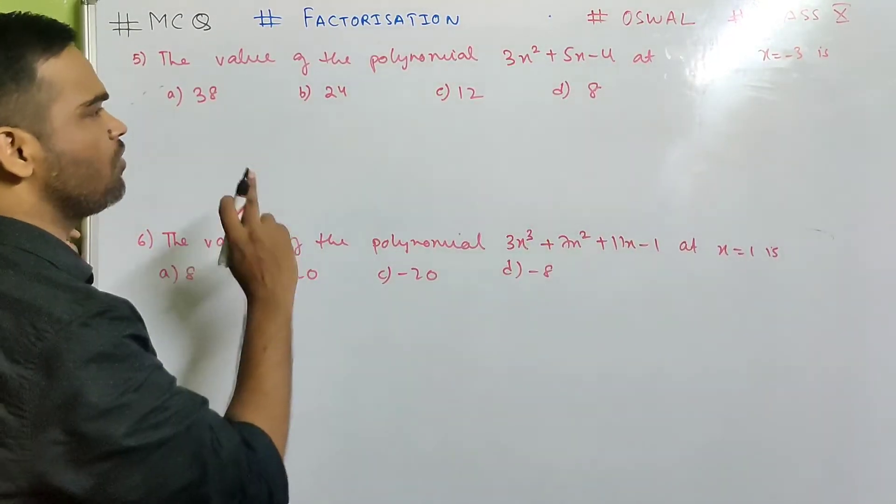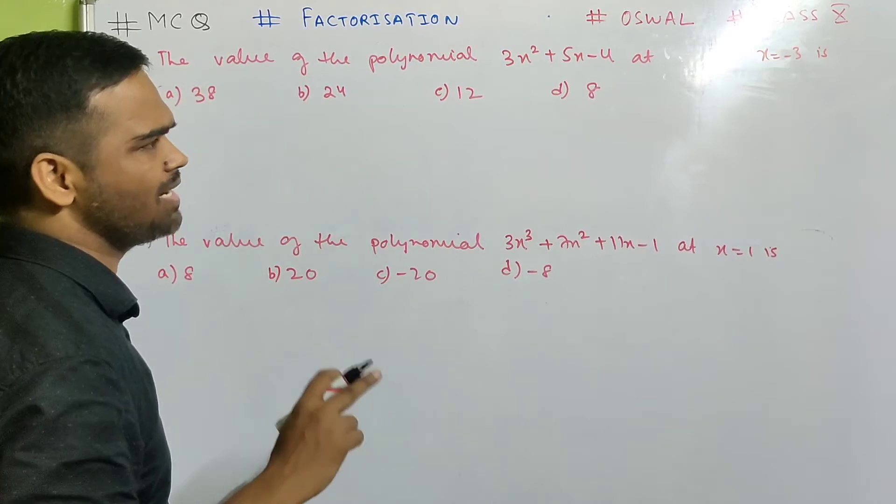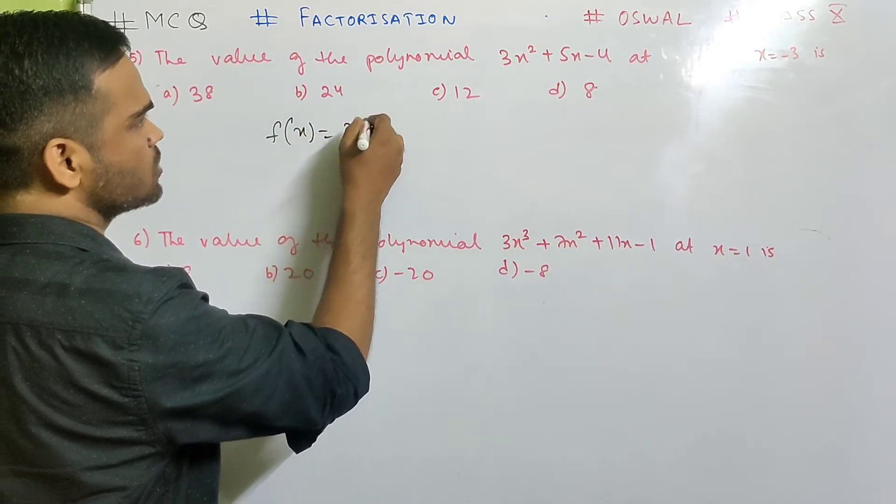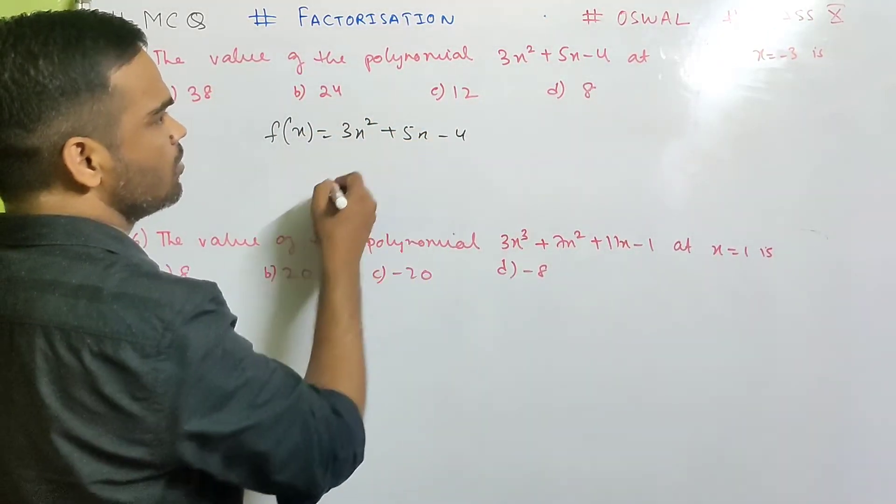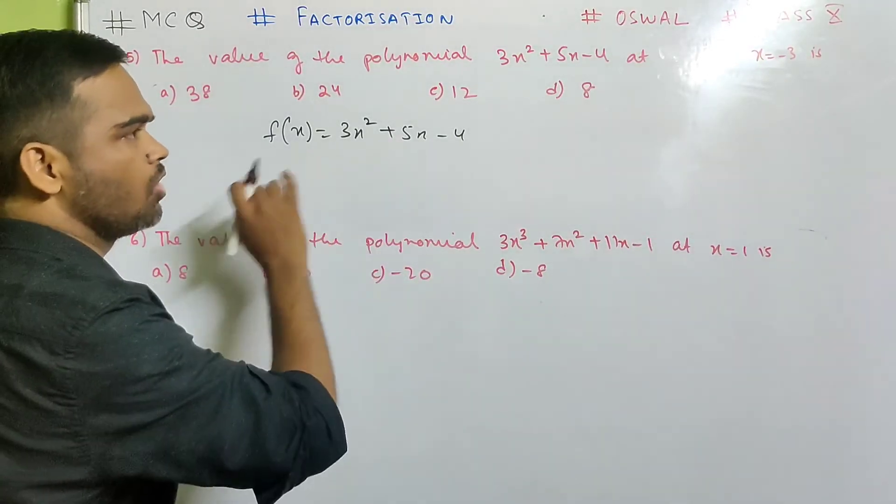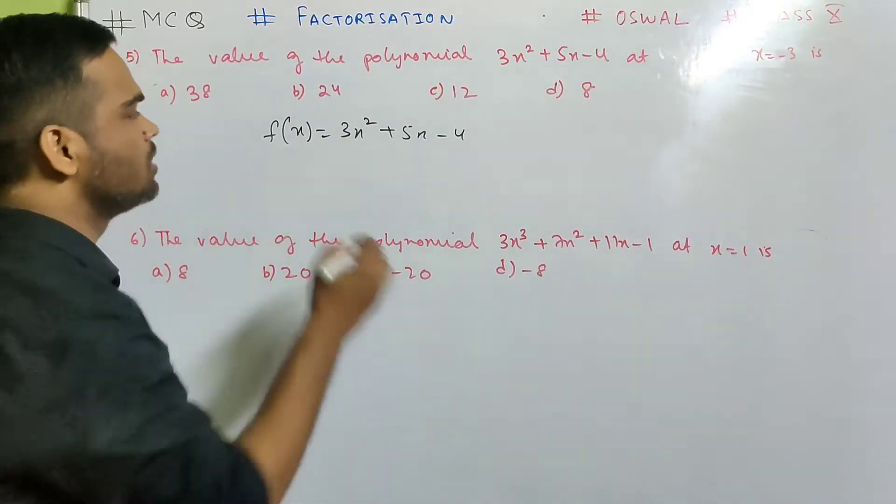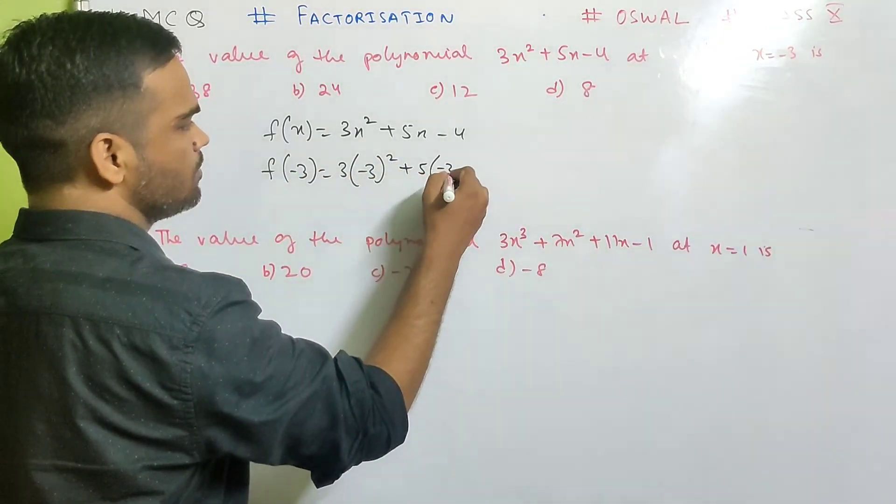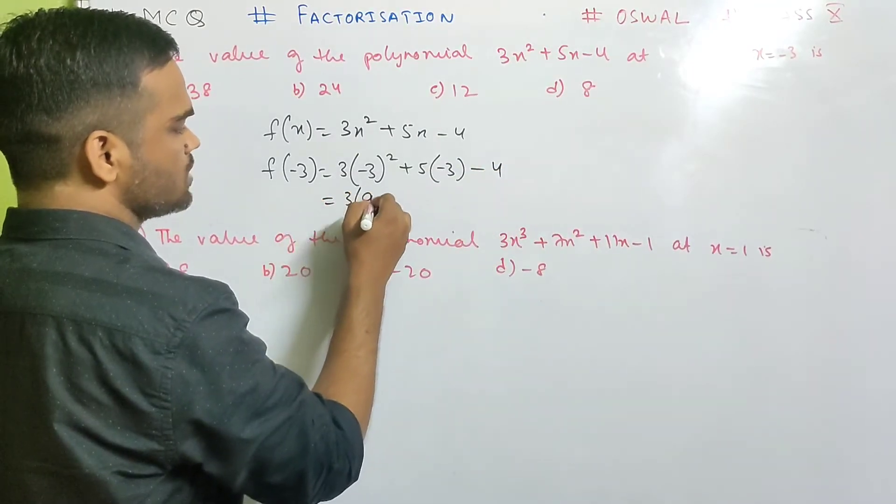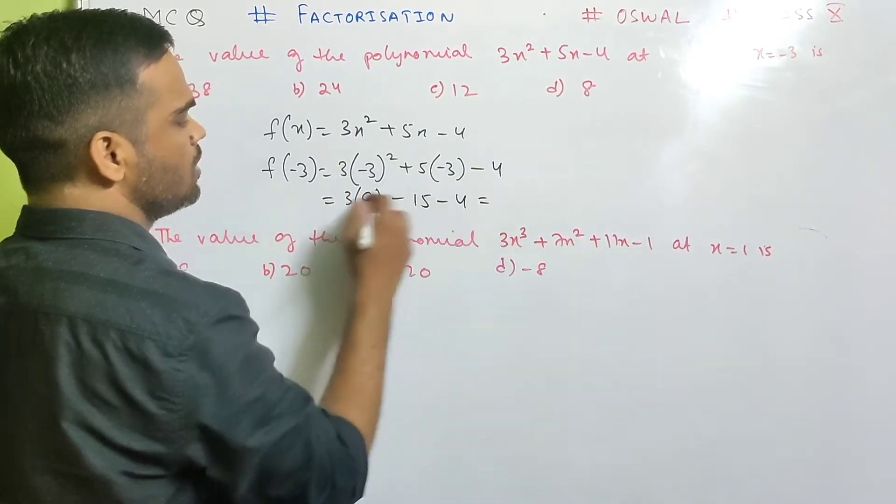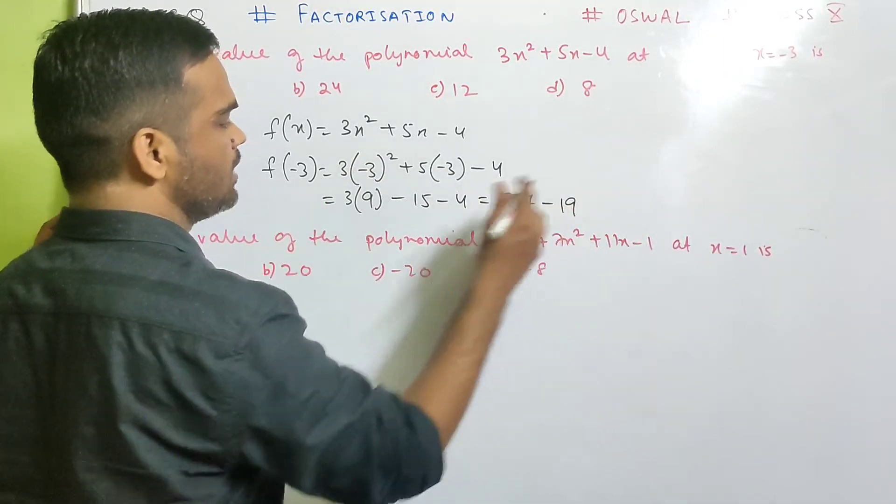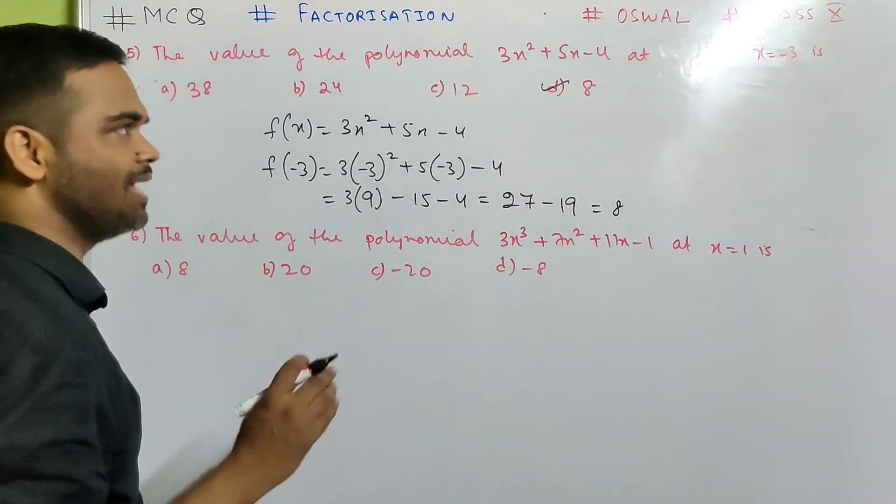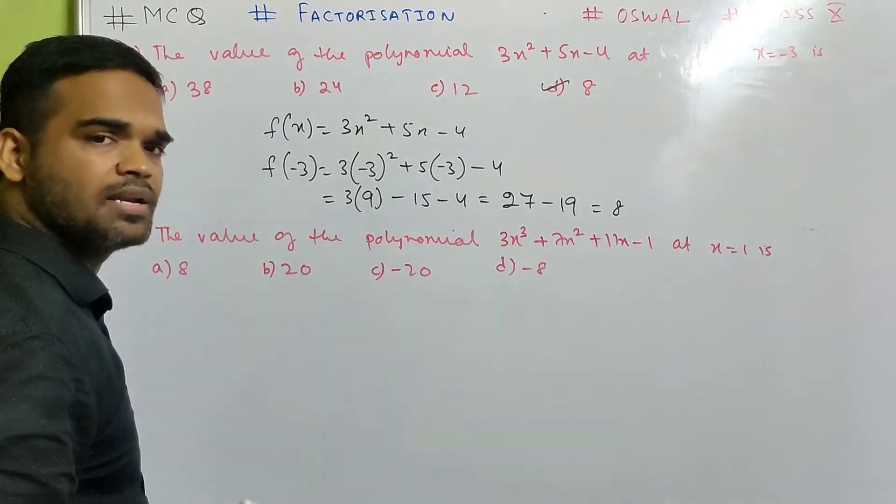Let us do the next one. Look at number 5. The value of the polynomial 3x square plus 5x minus 4 at x equals to minus 3 is simple. Look over here. Your function is 3x square polynomial 5x minus 4. So they have asked the value of this polynomial at x equals to minus 3. So what to do? Instead of x put minus 3. And nothing else? Isn't it? So 3 square is 9. This is minus 15 minus 4. That's 27 minus 19. Am I correct? Yeah. That's 8. So your option D is correct.